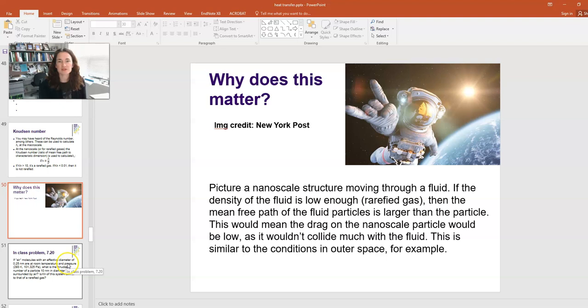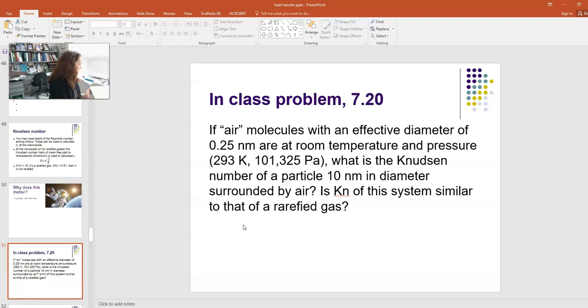So, to kind of hammer this home, I'd like to work a problem for you from your textbook. Here it is. Nanotechnology Understanding Small Systems. Here we have air molecules that have an effective diameter of 0.25 nanometers. So, of course, this is a mix of oxygen and nitrogen primarily. And they're at room temperature and pressure. So, we're going to say that room temperature is about 293 Kelvin and atmospheric pressure is at sea level, which is 101,000 pascals roughly.